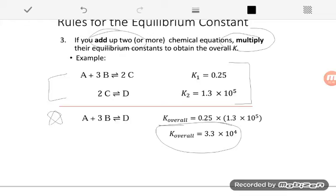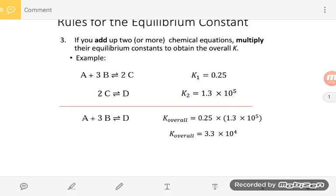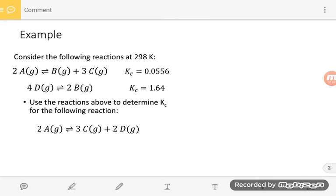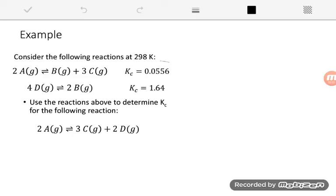We can put all three of these rules together to take a set of two or even more equations to give us the equilibrium constant for a related equation. So let's look at this example. Consider these two reactions. These two reactions we've studied and we've measured and we know their equilibrium constant. We want to use these to determine the equilibrium constant for this final reaction.